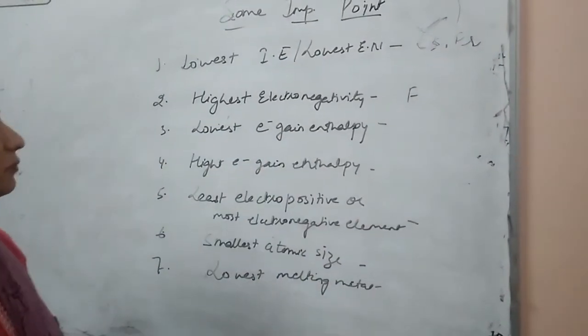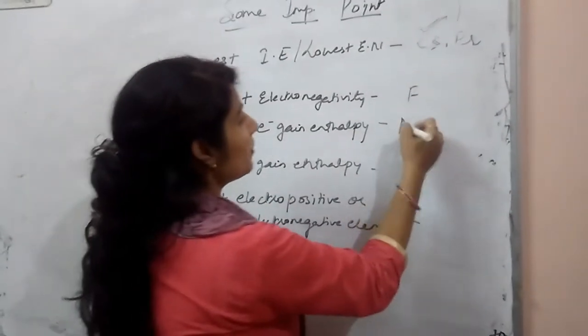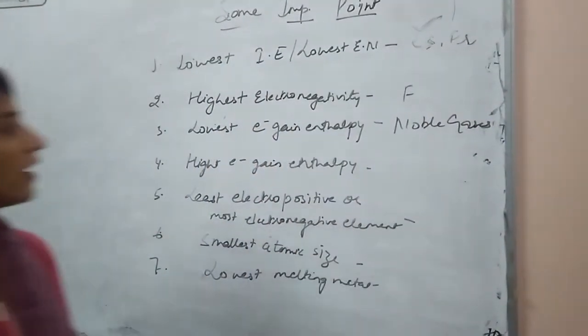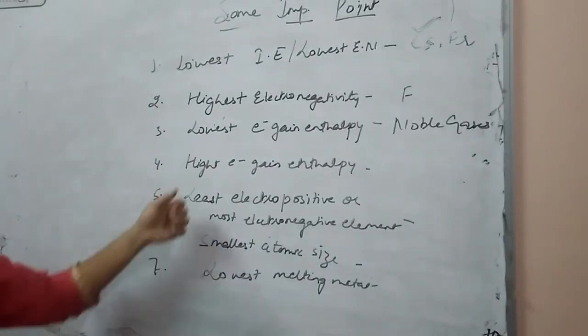Now next is lowest electron gain enthalpy. Lowest electron gain enthalpy is of noble gases.